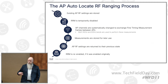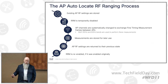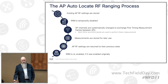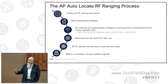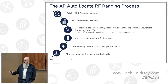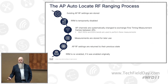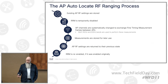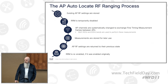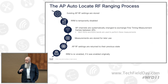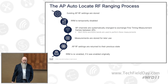Then it disables RRM so nothing changes during the process. It systematically changes the AP channels to a common channel so they can range with each other, using a very wide channel for better accuracy. We use both 5 and 6 GHz bands — not 2.4 because we don't get enough benefit. The SSIDs and radios are live at this time, but obviously not a great experience when everything's on the same channel, so again — maintenance window.